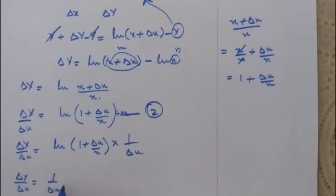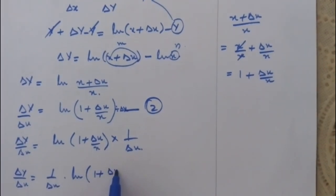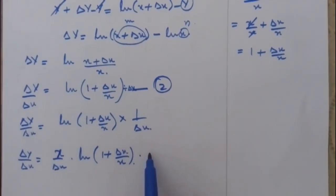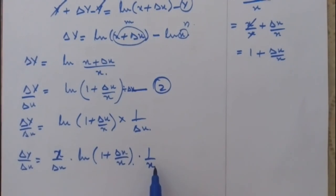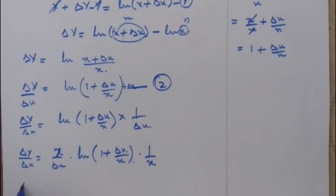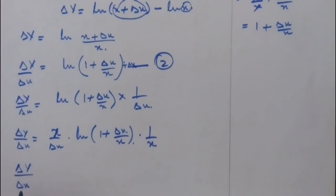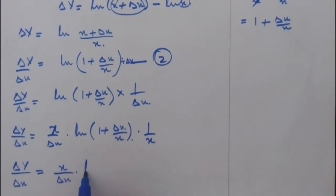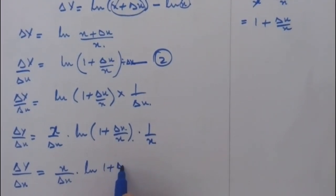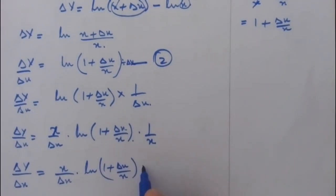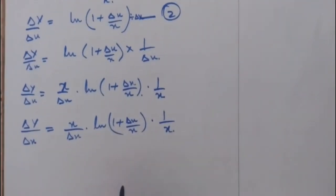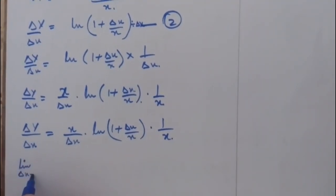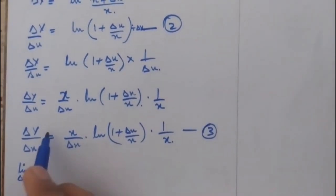So del y upon del x is equal to 1 upon del x times ln(1 plus del x/x). Now if we multiply and divide this expression by x, there will be no variation in the expression. So del y upon del x is equal to x upon del x times ln(1 plus del x/x) times 1 upon x. Now if we apply the limit del x tends to 0, then equation 3 becomes: limit del x tends to 0 of del y upon del x is equal to limit del x tends to 0.